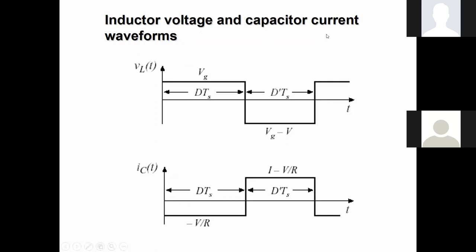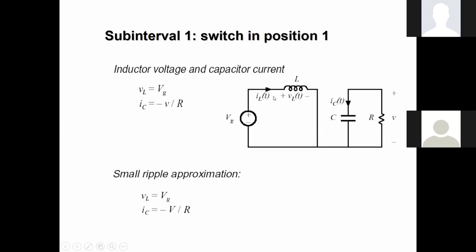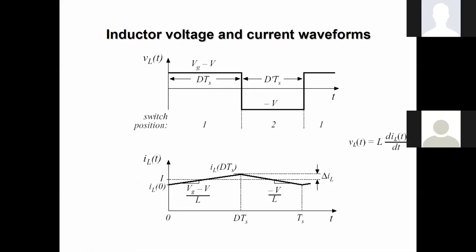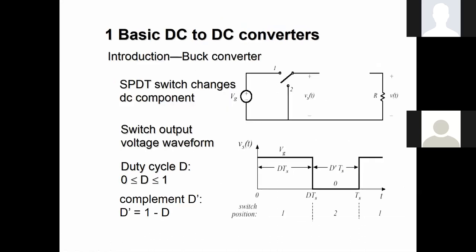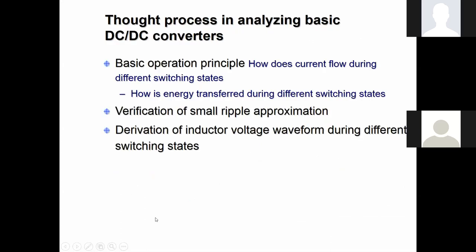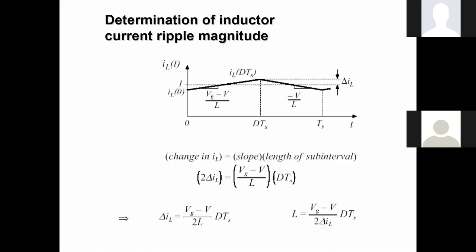The term d′ (d-dash) is used here, where d′ = 1 − d. So from 0 to dTs the first interval applies, and the remaining portion (1 − d)Ts = d′·Ts covers the second interval. Wherever d′ is mentioned it simply means 1 − d, and this is just used for simplification purposes.